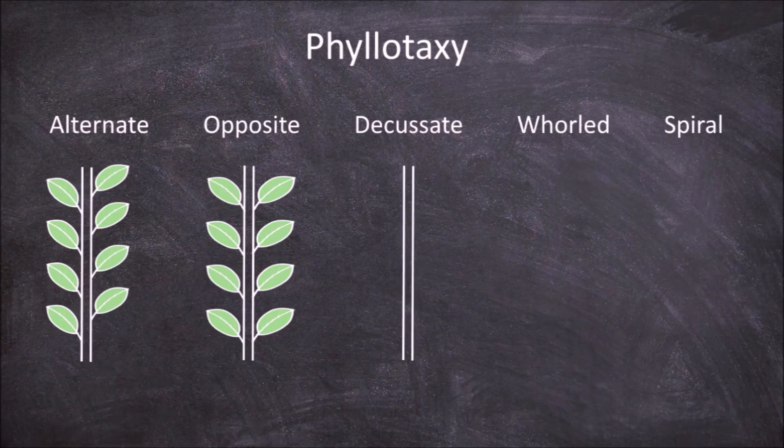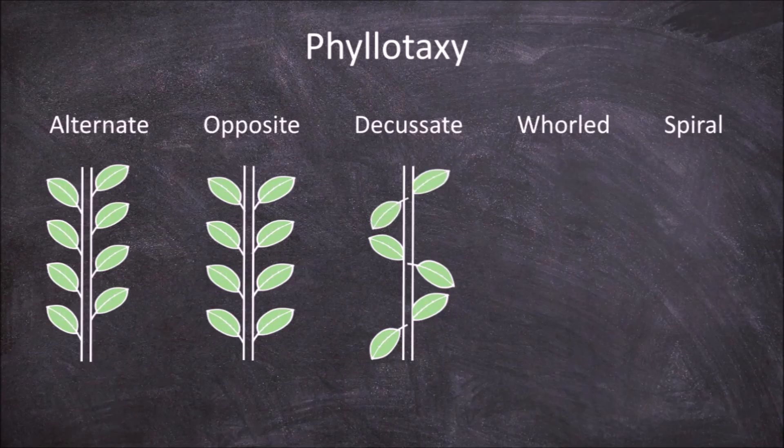If a plant has decussate phyllotaxy, the leaves are found in pairs like opposite phyllotaxy, but each successive pair is found at a right angle to the previous pair.